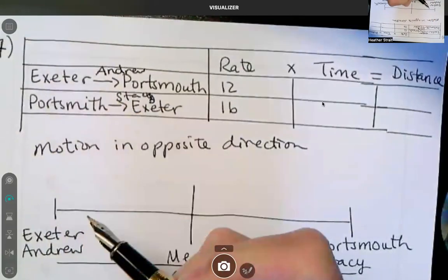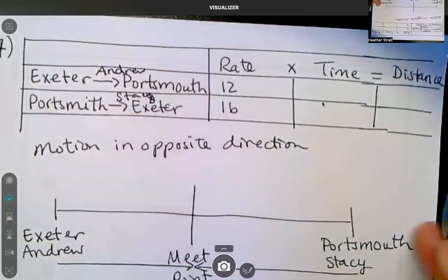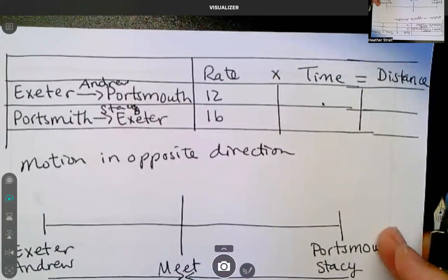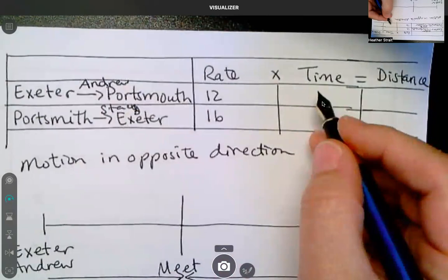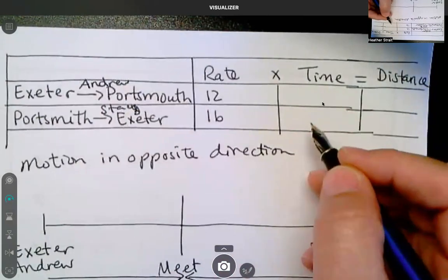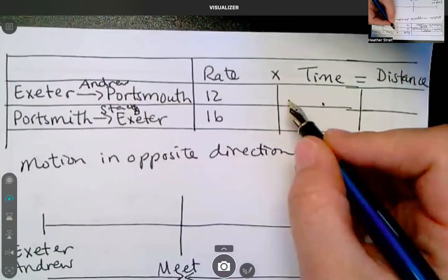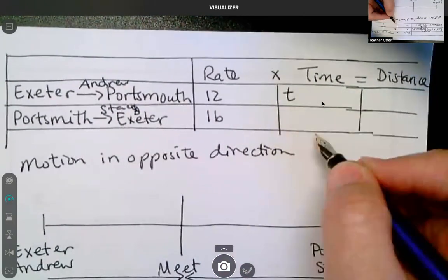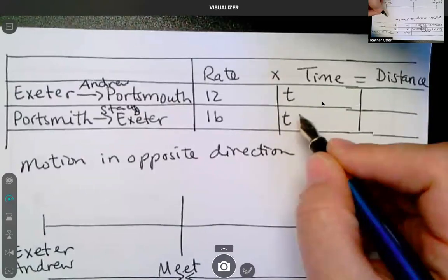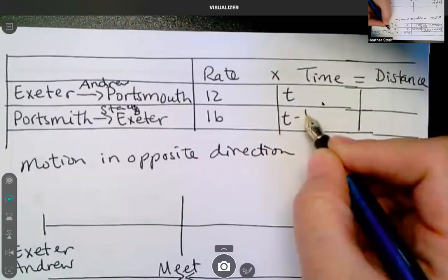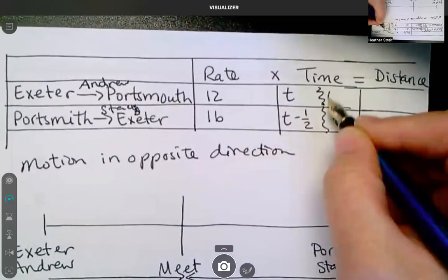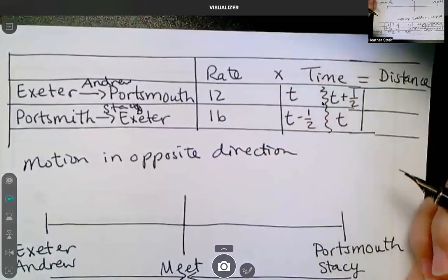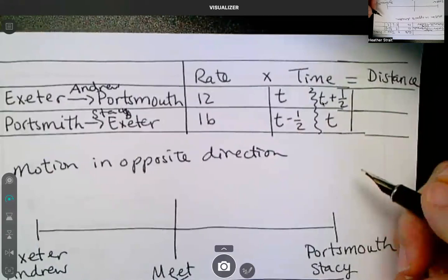He left at 9:30 and she left at 10. Oh, so at this point, I told you guys each to choose who you want to be T. Who made Andrew T? Yeah. Who made Stacey T? Okay. We're gonna have to do it both ways. Okay. If he is T, then Stacey is what? T minus one half. But if she is T, he's T plus one half. It doesn't matter. It all comes out in the wash.